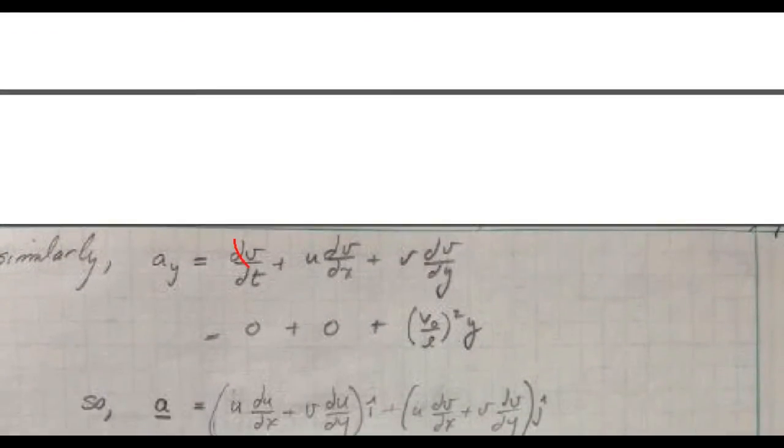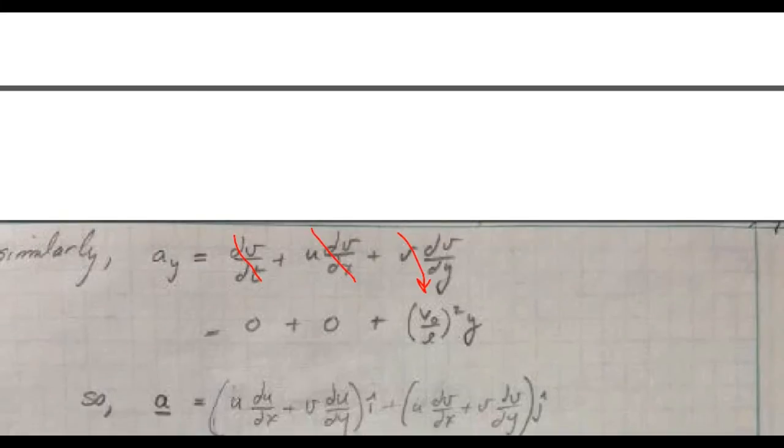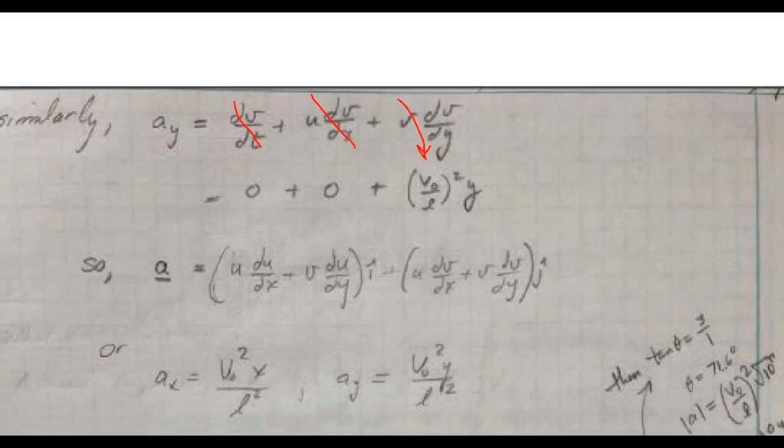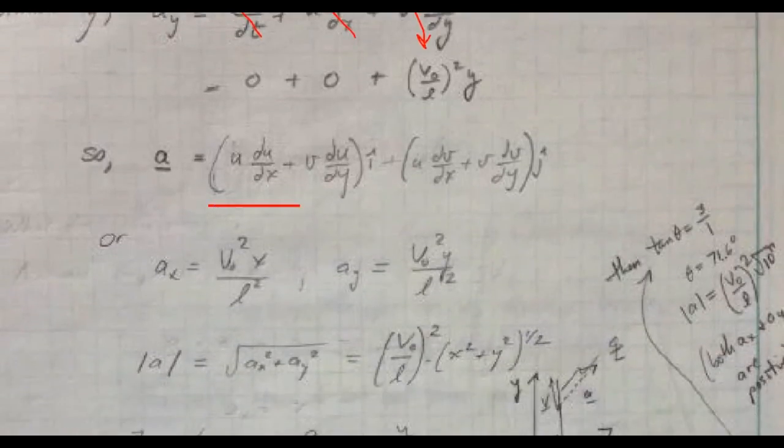Similarly, we could do this for ay. Remember that this one is zero because it's steady flow. This one is zero because v is in terms of y only, so when we take the derivative with respect to x, we get a zero. But v dv/dy gets the term below, which is similar to the one that we got for x, but has a y here instead of an x. So here's what the acceleration field looks like mathematically.